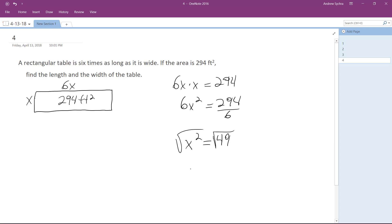Then take the square root, and then what you end up with is x is equal to plus or minus 7, and we're only going to take the positive value, so x is equal to 7. So that means it's going to have dimensions of 7, and 6 times 7 is 42.